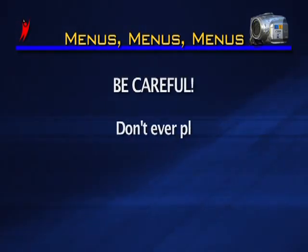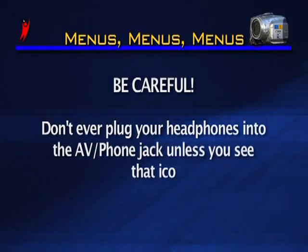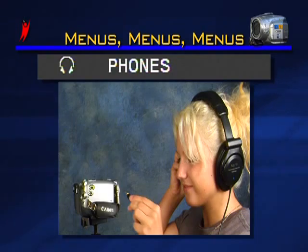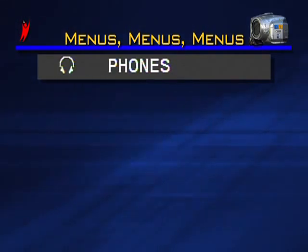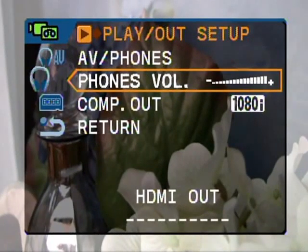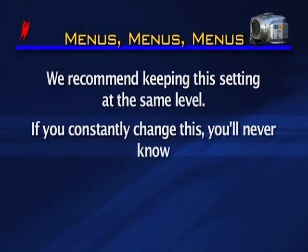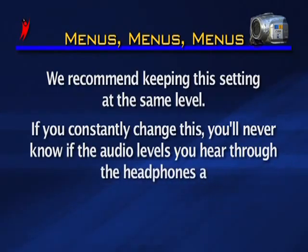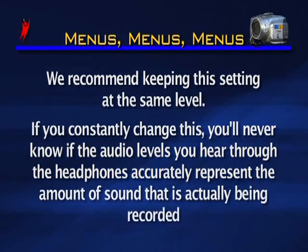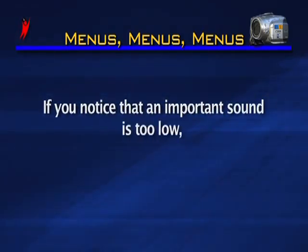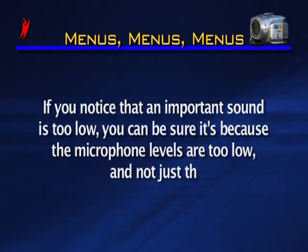Be careful — don't ever plug your headphones into the AV phone jack unless you see that icon on your screen. If you plug the headphones in while AV is selected, you might damage your headphones and you will certainly hear sounds you don't want to hear. When AV phones is set to phones, the next item in the menu — phones volume — will become active. Here, you can use the joystick to change the audio levels from the headphone jack. We recommend always keeping this setting at the same level; if you constantly change it, you'll never know if the audio levels you hear through the headphones accurately represent the amount of sound actually being recorded to tape.